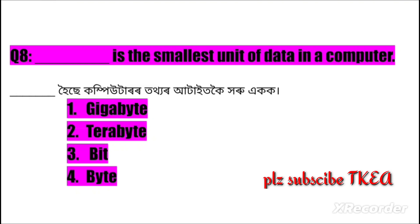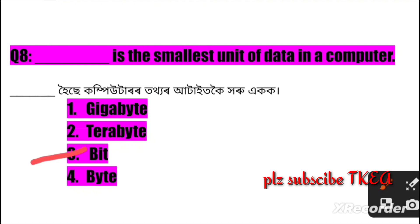Question number eight: What is the smallest unit of data in a computer? Option one: gigabyte, two: terabyte, three: bit, four: byte. The right answer is number three: bit.